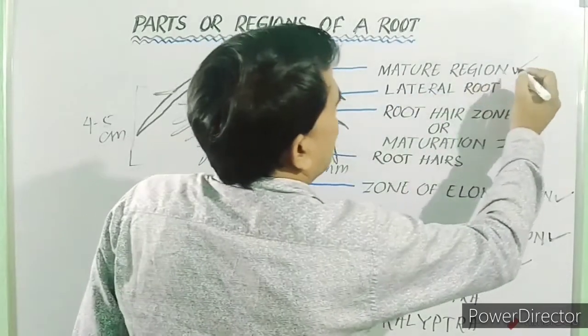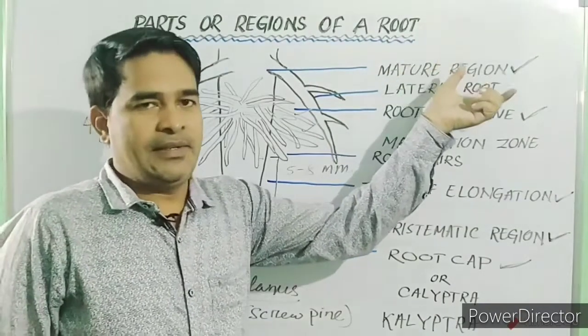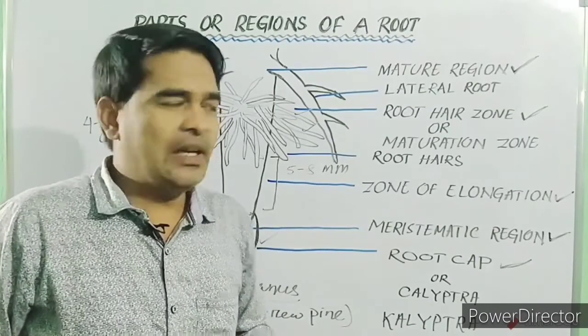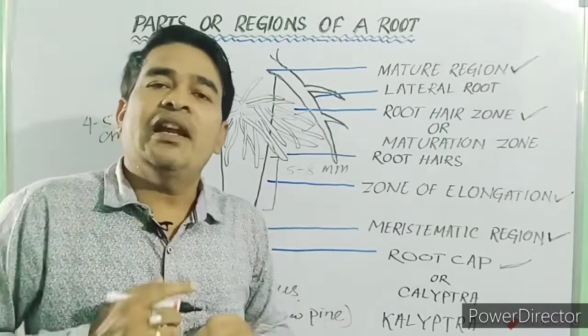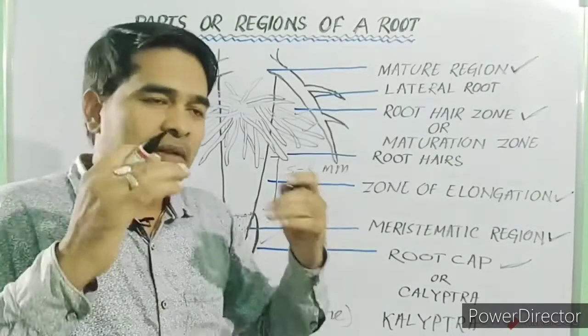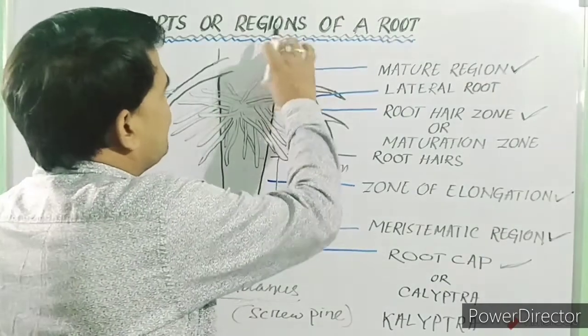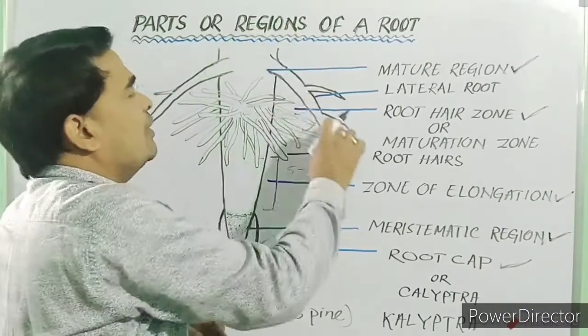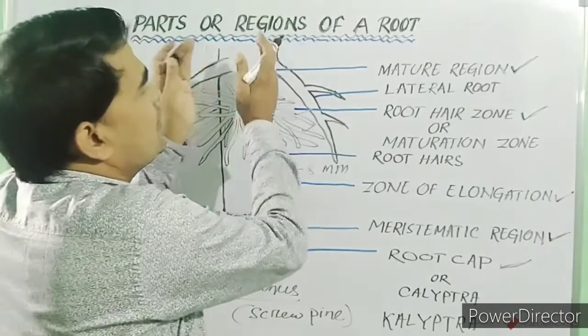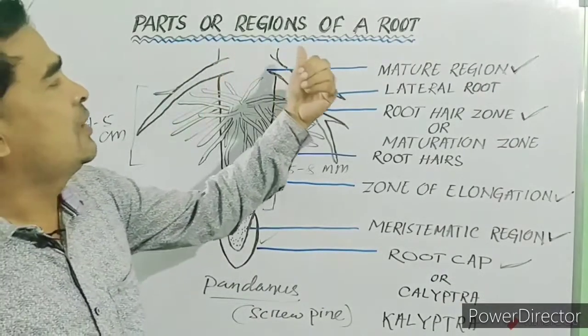Then, next zone or the last zone is mature zone or zone of mature cells. In this region, the cells are thick-walled and impermeable. And in this zone, there is no absorption of water and minerals. This zone forms the bulk of the root. That means, this zone forms the major part of a root. At places in this zone, there is formation of lateral roots. And secondary growth takes place in this zone. So, this is all about the different parts or regions of a root.